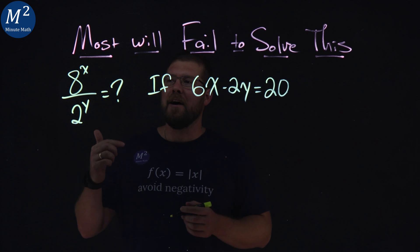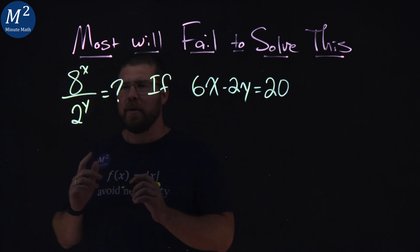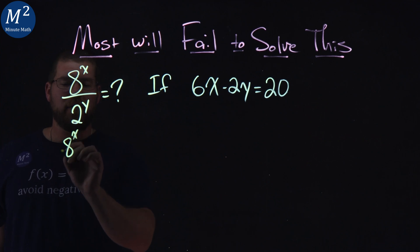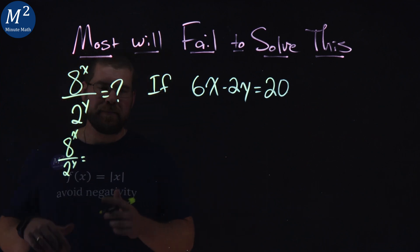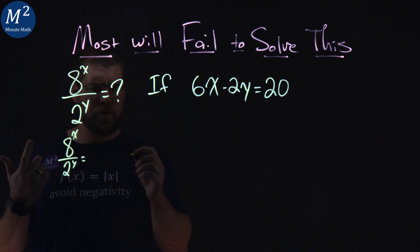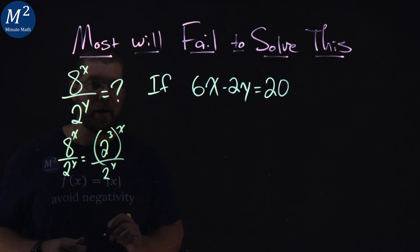All right, what we have: 8 to the x over 2 to the y power. One thing we can do is I'm rewriting it. I want to see if I can get a common base. 8 is the same thing as 2 to the 3rd power. So 2 to the 3rd power to the x power over 2 to the y power.